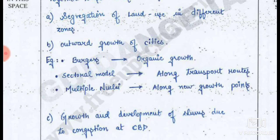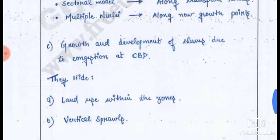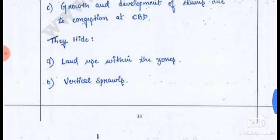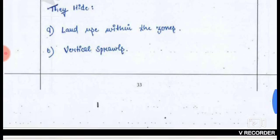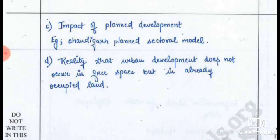Morphological models together reveal segregation of land use, outward growth of cities — Burgess's organic concentric growth, sectoral model growth along transport routes, multiple nuclei model along new growth points — and development of slums due to congestion of the CBD. They hide interactions within zones, impact of planned development, and the reality that urban development does not occur in free space.